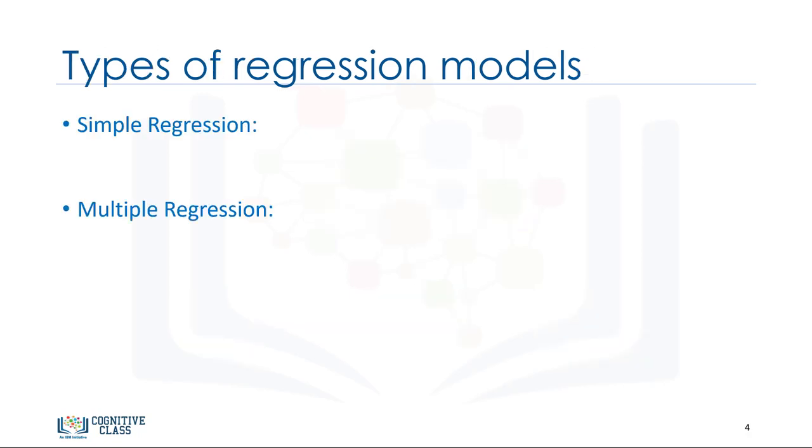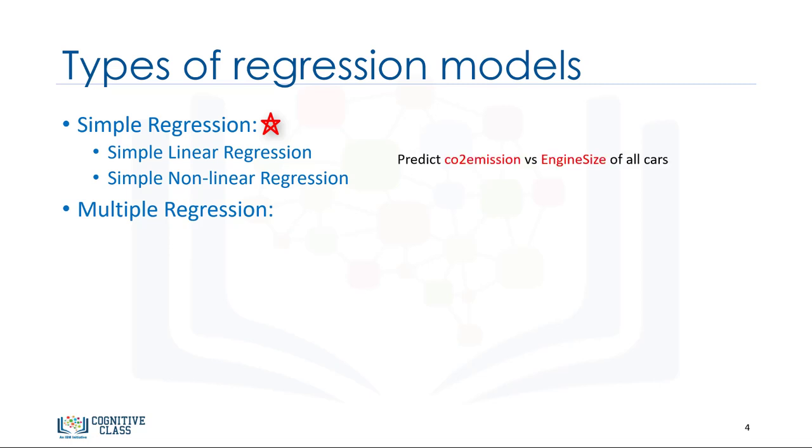Basically, there are two types of regression models: simple regression and multiple regression. Simple regression is when one independent variable is used to estimate a dependent variable. It can be either linear or non-linear. For example, predicting CO2 emission using the variable of engine size. Linearity of regression is based on the nature of relationship between independent and dependent variables.